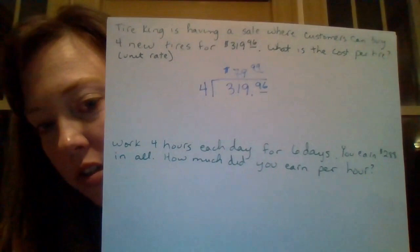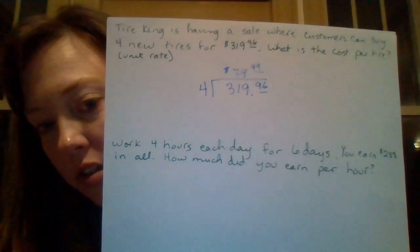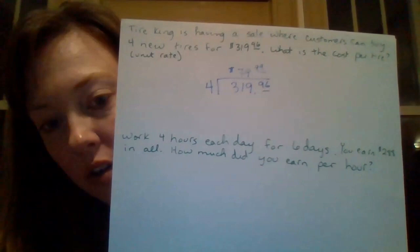Next question: if you want to know how much you make per hour — if you work four hours each day for six days, you can earn $288 in all. How much did you earn per hour? You take your $288, put it in the house, and divide by 24 hours, because it's four hours a day times six. When you put it in your calculator, you get $12 — so you make $12 per hour.